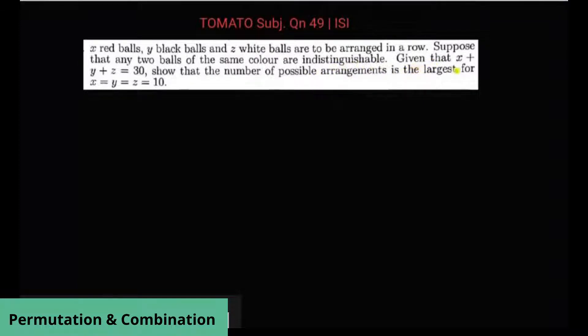Given that x plus y plus z is equal to 30, show that the number of possible arrangements is the largest for x is equal to y is equal to z is equal to 10.